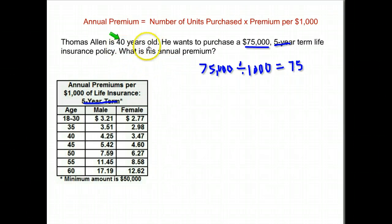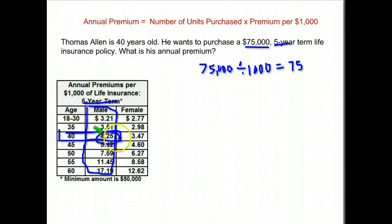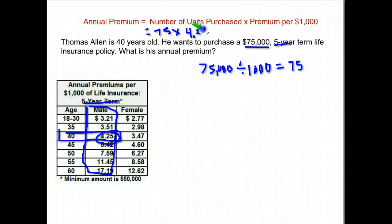Now let's find his price. He's forty years old and he is a male, so you want to see where those meet up on the chart. These are all the prices for someone who is male, and here is the age of forty. It's four dollars and twenty-five cents — you look where those meet up. So he is paying for seventy-five units at four dollars and twenty-five cents per unit, which is the number we found from the chart.